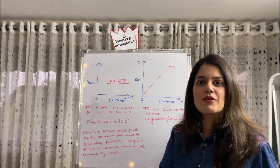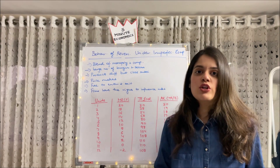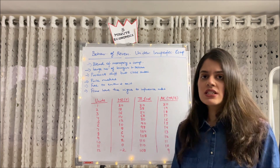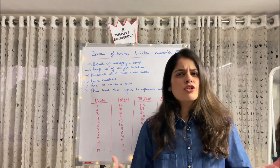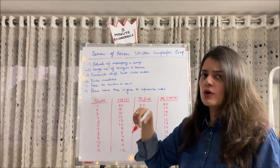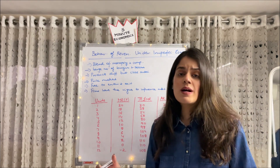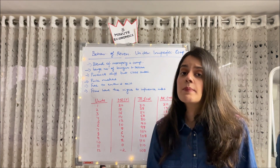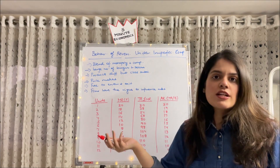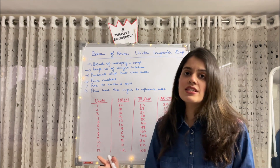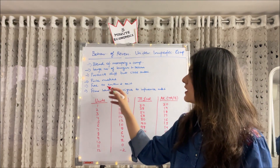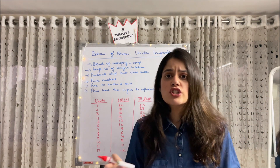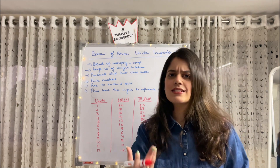Now moving to revenue under an imperfectly competitive market. It is a blend of perfect competition and monopoly, also known as a monopolistically competitive market. It has a large number of buyers and sellers, but products are differentiated and close substitutes — for example, Coke and Pepsi serve the same purpose but are not identical. Firms are price makers — they set prices according to their own wish, unlike in perfect competition. Firms are free to enter and exit the industry and have the right to influence the market since their products are differentiated.